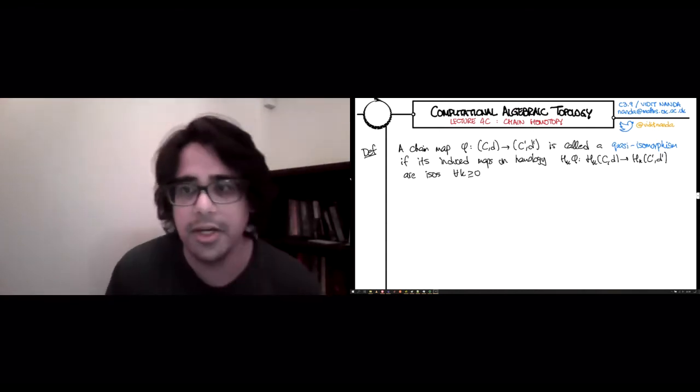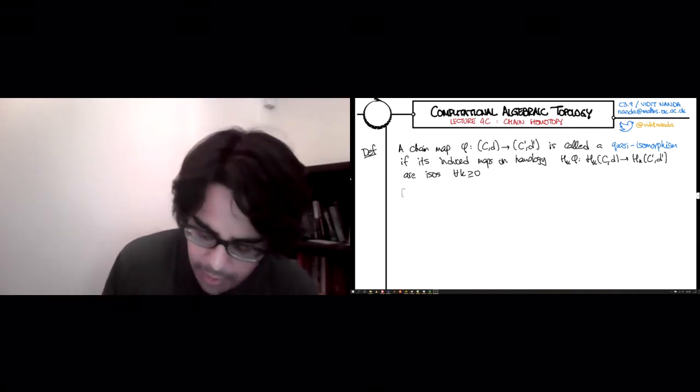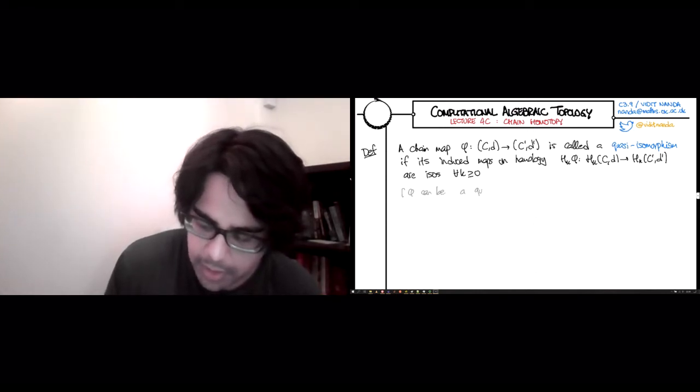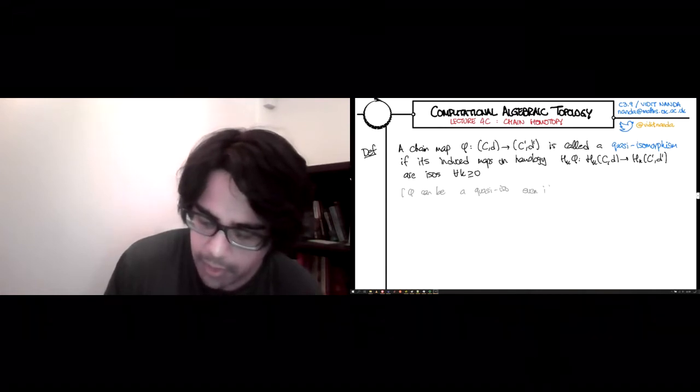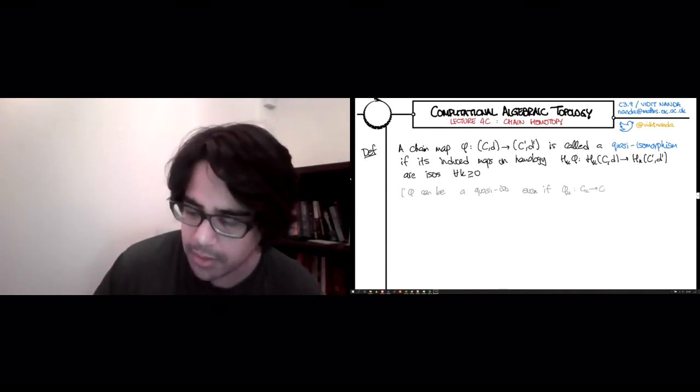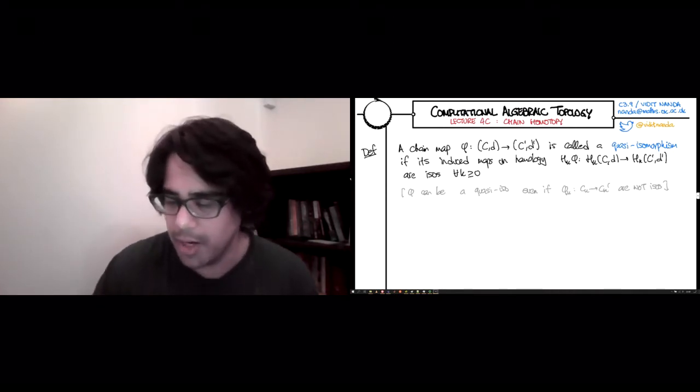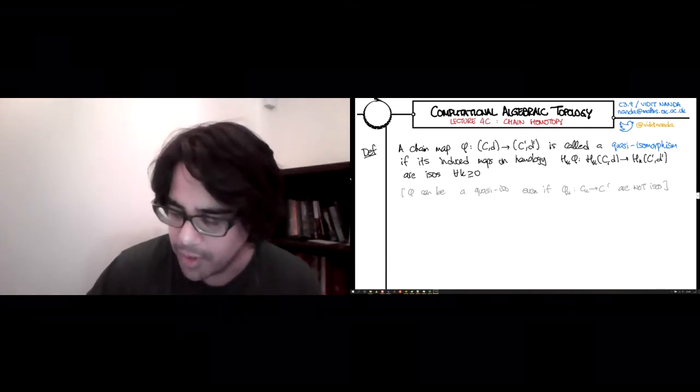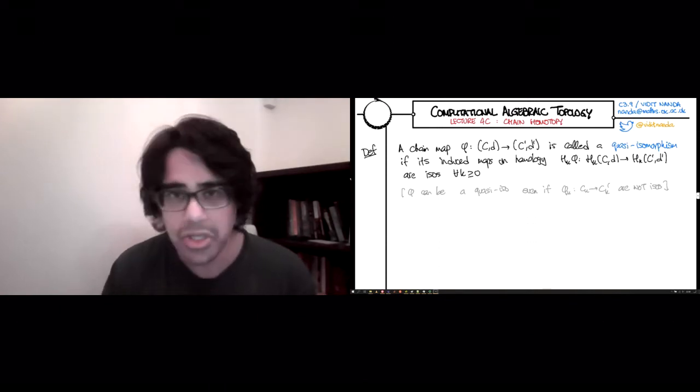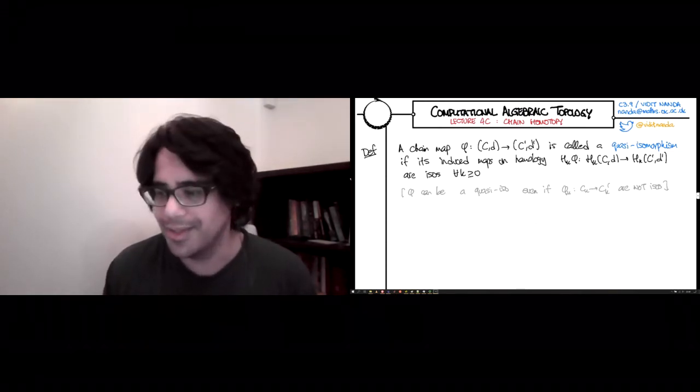In every dimension K, that linear map connecting the K-th homology of C to the K-th homology of C' is an isomorphism. The point is that phi can be a quasi-iso even if phi itself is a collection of maps going from chain groups to chain groups that are not isomorphisms. A quasi-isomorphism is a much more relaxed notion of an isomorphism of chain complexes, which would require rigidly that the dimension of C_K be the dimension of C'_K, and that the map phi_K be an invertible linear map between these two chain groups.